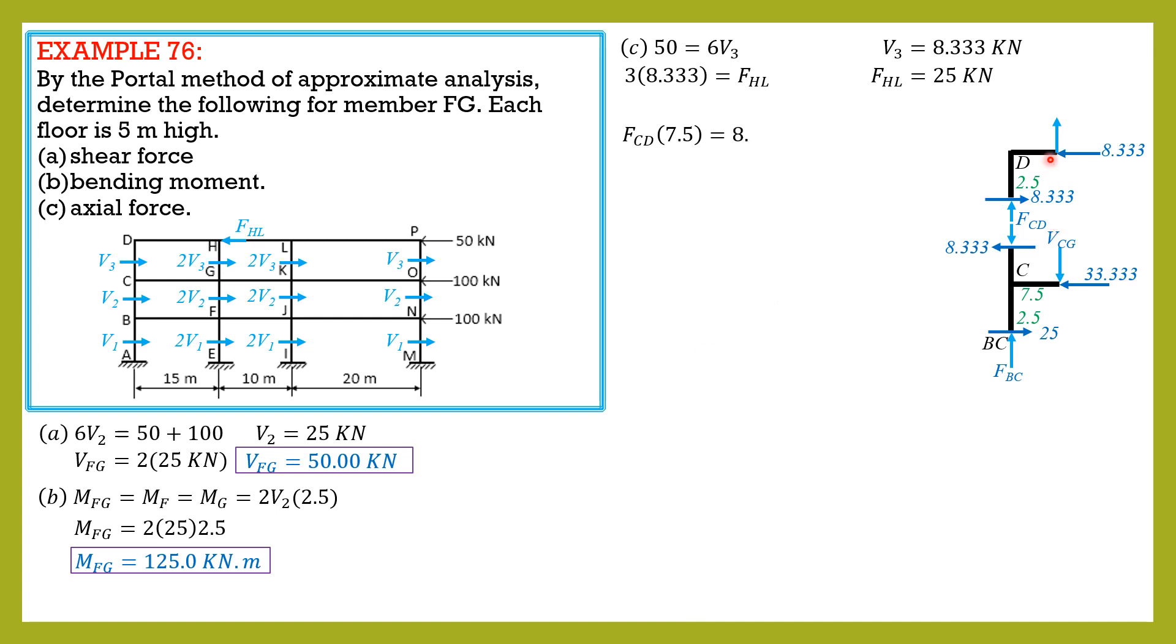So summation moment about this joint, FCD clockwise times 7.5, rather half of 15, is equal to v3 which is 8.333 times 2.5. So FCD is 2.778 kilonewtons.